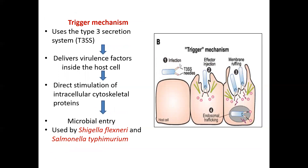The trigger mechanism, in comparison, involves the secretion using the type 3 secretion system, which includes the insertion of certain effectors — looking like a needle projection from the bacteria into the host cell cytoplasm — and releasing of those effectors, enzymes, and proteins from the bacteria within the host. These enzymes and proteins lead to the stimulation of certain microtubules and cytoskeleton of the cells, and similarly to the zipper mechanism, leading to ruffling of the membrane around the microorganisms, encapsulating them and engulfing all the bacteria inside, then doing the same thing within the endosome in the zone of trafficking. This mechanism seems to be used by Shigella flexneri.